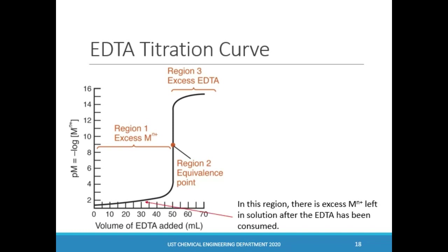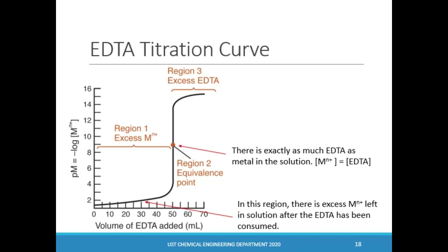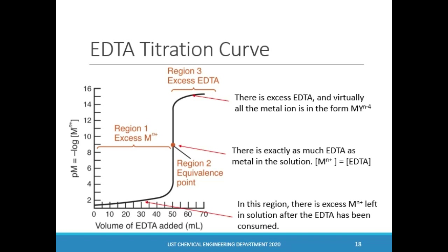In the pre-equivalence region, the metal ion is still in excess and EDTA is fully consumed. Once the equivalence point is reached, the metal ions are in equal concentration as the EDTA in solution. However, this concentration is small since at the equivalence point the reaction is marked as complete and almost all of the metal ions have reacted with almost all of the EDTA added. Adding more EDTA makes the EDTA concentration in excess, marking the post-equivalence region, where very small concentration of free metal may still exist but virtually all are already complexed with EDTA.